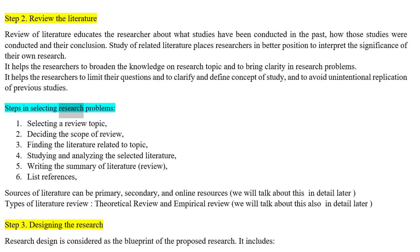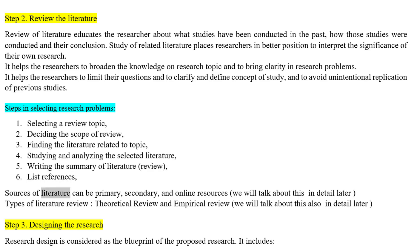Steps in reviewing literature: selecting a review topic; deciding the scope of review; finding the literature related to the topic; studying and analyzing the selected literature; writing the summary of the literature review; and listing references. Sources of literature can be primary, secondary, and online resources.